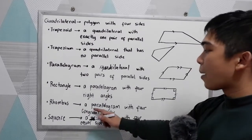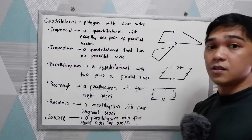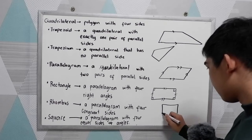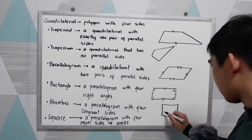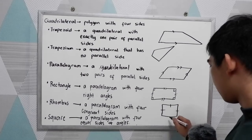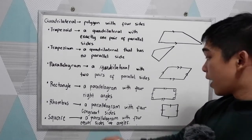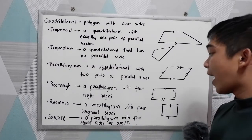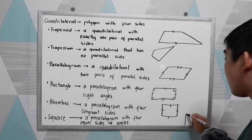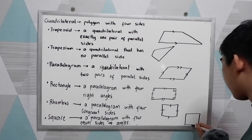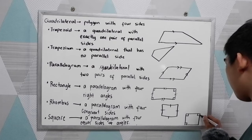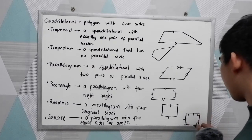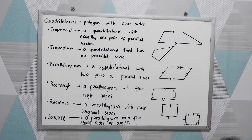Rhombus is a parallelogram with four congruent sides. So all sides are equal. And a square is a parallelogram with four equal sides and angles — a square is a combination of a rectangle and a rhombus. All angle measures are 90 degrees, and all sides are congruent or equal.